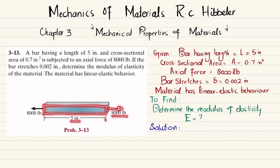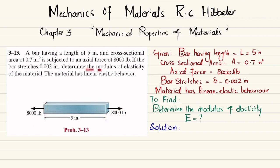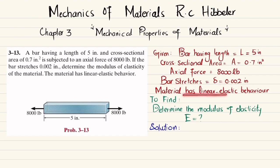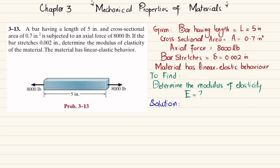The bar has a 5-inch length and an axial load of 8000 pounds causing a change in length of 0.002 inch. Given data: bar length = 5 inch, cross-sectional area = 0.7 in², axial force = 8000 lb, change in length = 0.002 inch, material behaves elastically. We need to determine the modulus of elasticity.